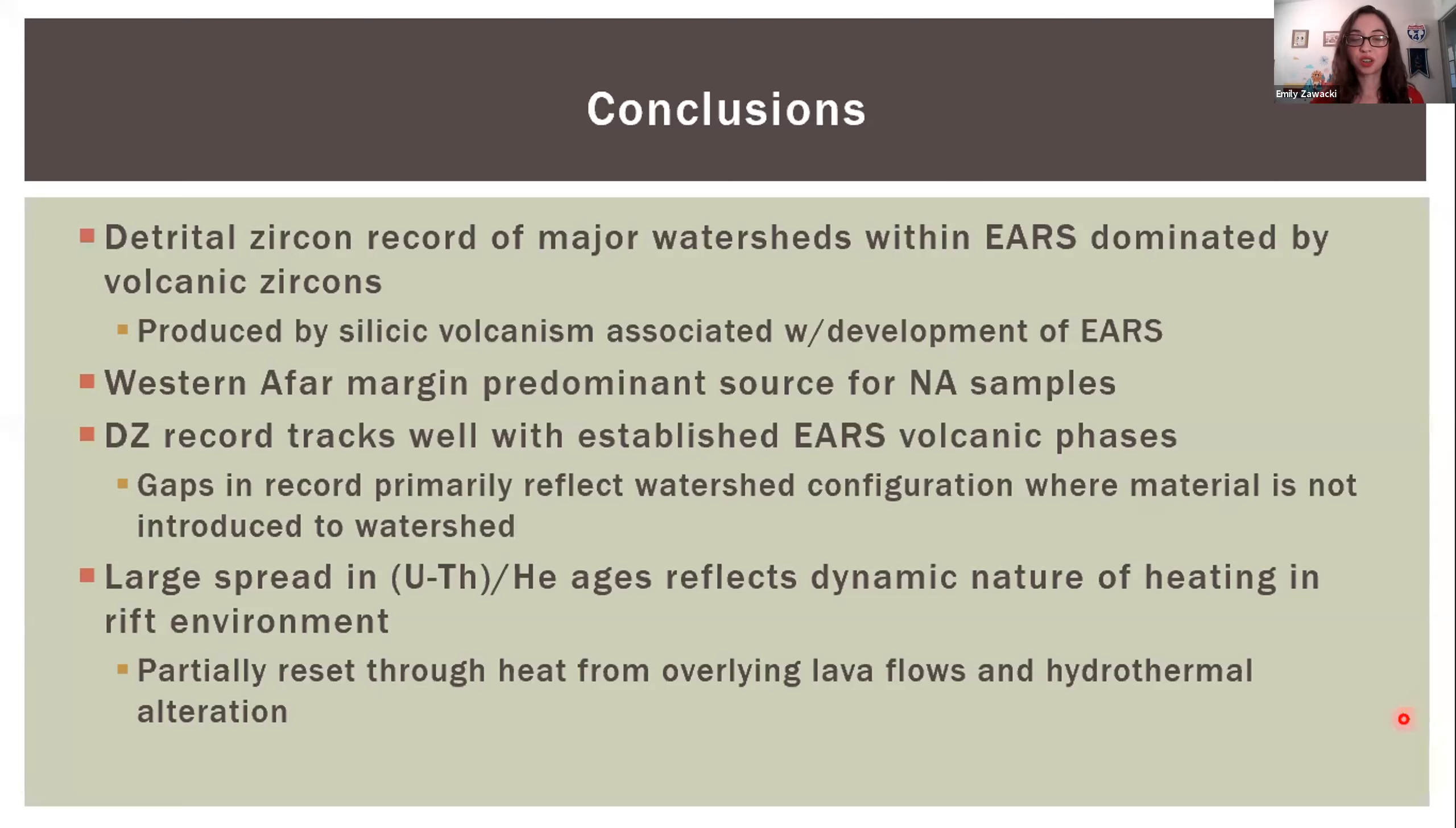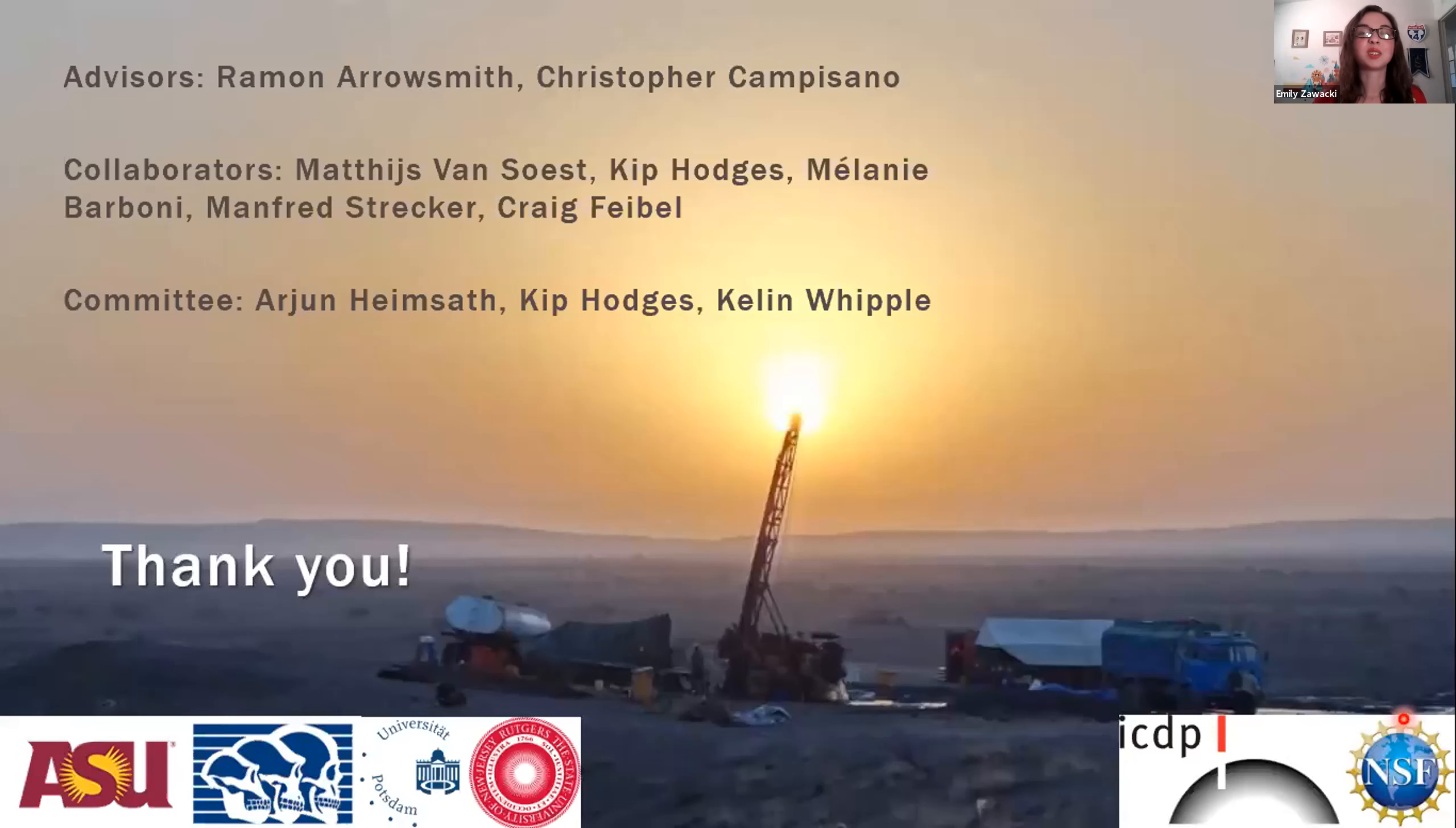To conclude, our detrital zircon record of the major watersheds within the East African rift system are dominated by volcanic zircons produced by silicic volcanism. The western Afar margin is the predominant sedimentary source for Northern Awash samples. The record tracks well with established volcanic phases with gaps due to differences in watershed configurations. The widespread helium ages reflect the dynamic nature of heating within the rift environment.